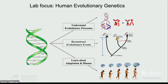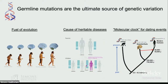Understanding the germline mutation rate is really important because it's the main source of evolutionary novelty. It's the cause of many heritable diseases and cancers. And also because mutations occur steadily over time, they provide a record of the time elapsed and hence act as a molecular clock for learning about when different evolutionary events occur.